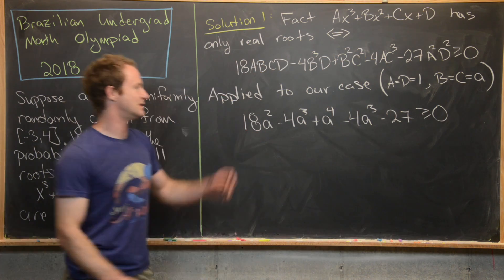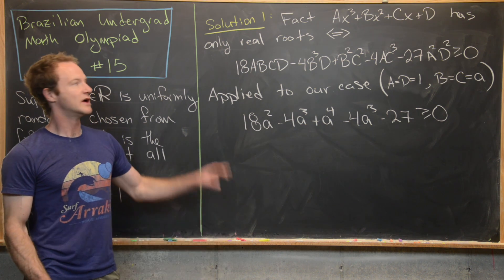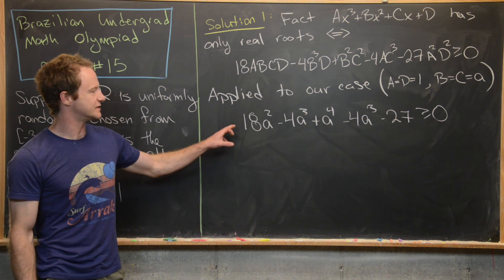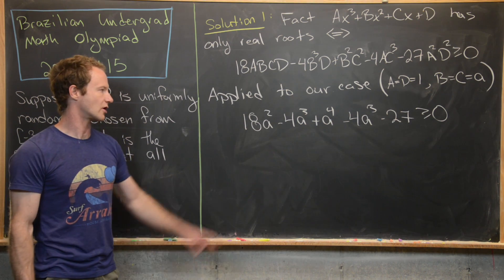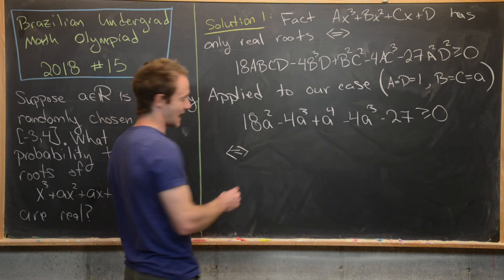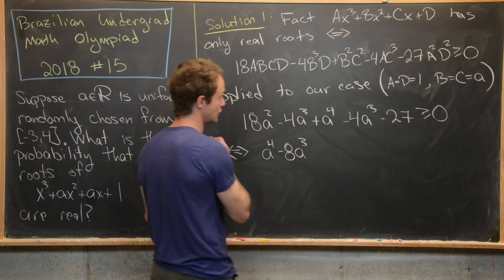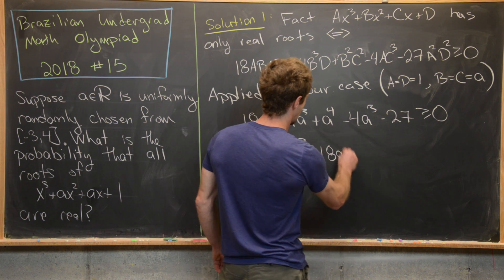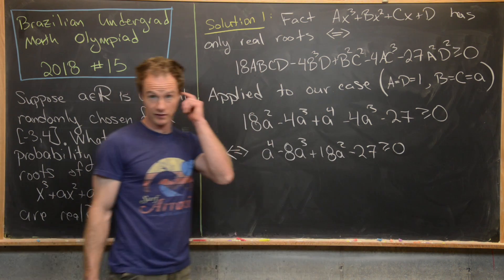Substituting, we get 18a squared minus 4a cubed plus a to the fourth, then minus another 4a cubed, and finally minus 27. We want that expression to be greater than or equal to zero for all real roots. Rearranging in decreasing order of exponents: a to the fourth minus 8a cubed plus 18a squared minus 27 ≥ 0.